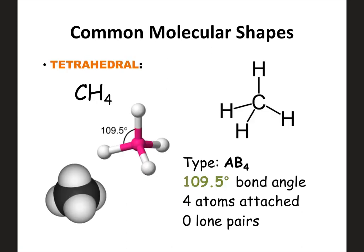Now increasing to four attached: tetrahedral has four atoms attached to the center and zero lone pairs. If this were flat, all bonds would have a 90-degree angle, but by thinking in three dimensions, we can get the atoms further apart. The bond angle is about 109.5 degrees — definitely one you need to know for tetrahedral shape. Anytime you have four attached and zero lone pairs on the center, the shape is tetrahedral.